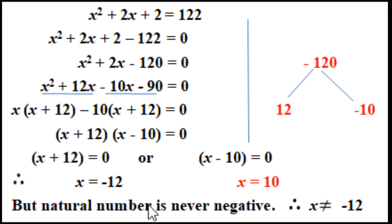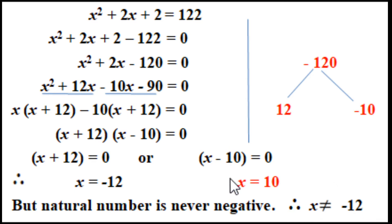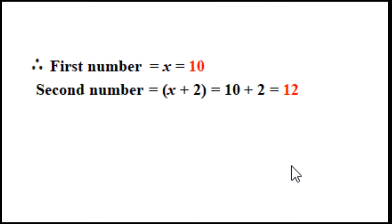But natural numbers are never negative — natural numbers start from 1 and are not integers, so they are never negative. Therefore x cannot be minus 12, and we take x equals 10. Hence the first number is 10 and the second number is x plus 2 equals 12. These are the two consecutive even natural numbers.